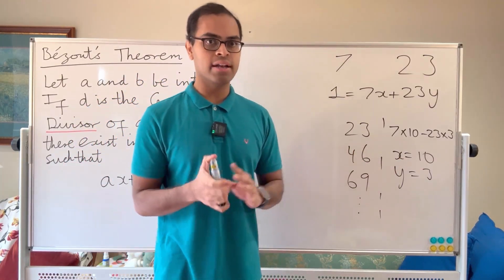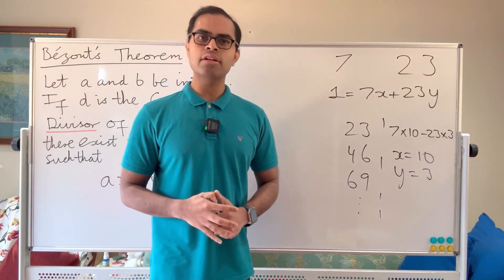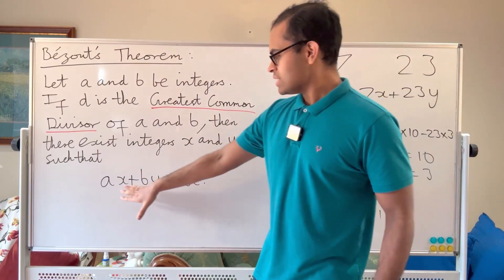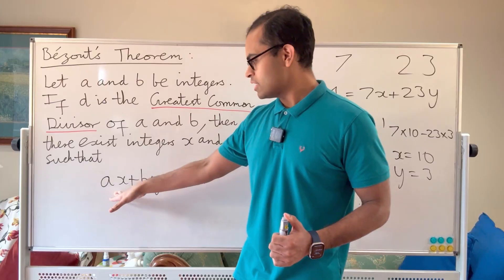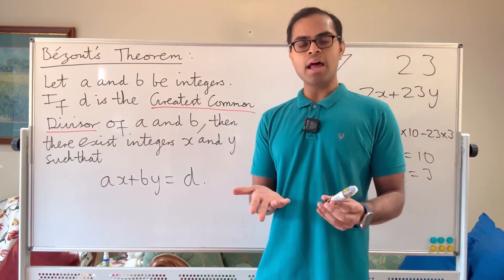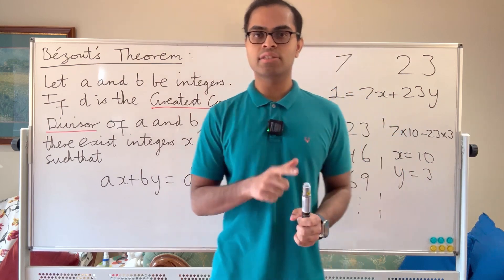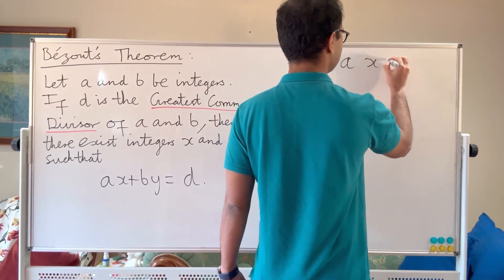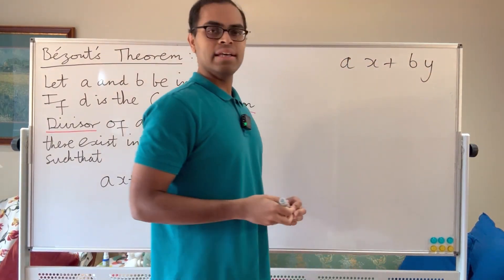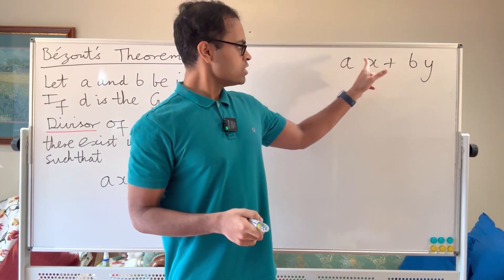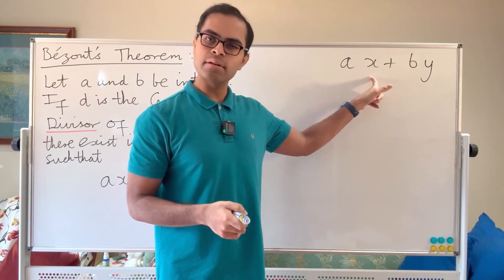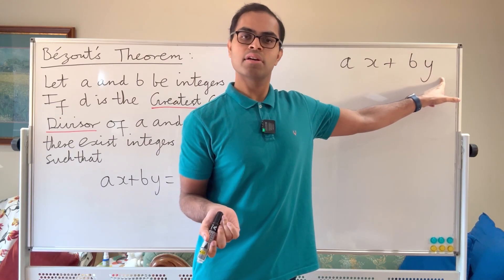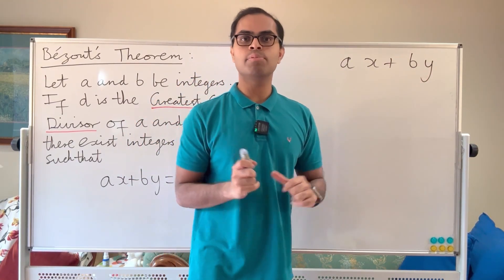Now I want to tell you one other aspect of Bézout's theorem: what are all numbers of the form ax plus by? It turns out all such numbers have to be multiples of d, the greatest common divisor. Why? Because d divides a, so d divides ax. And since d divides b, d also divides by. Therefore ax plus by is always a multiple of the greatest common divisor.